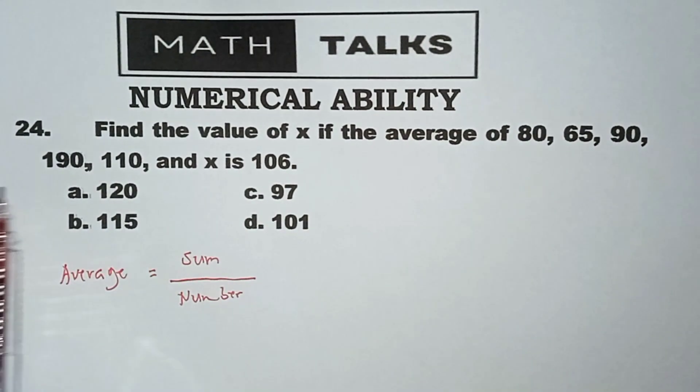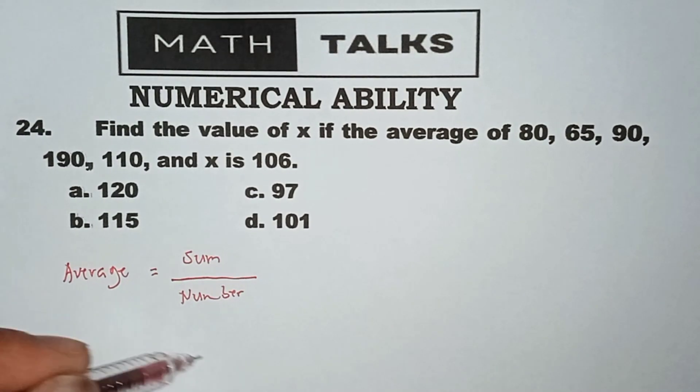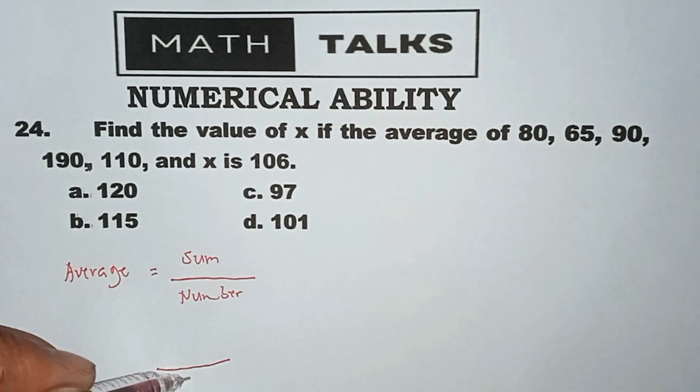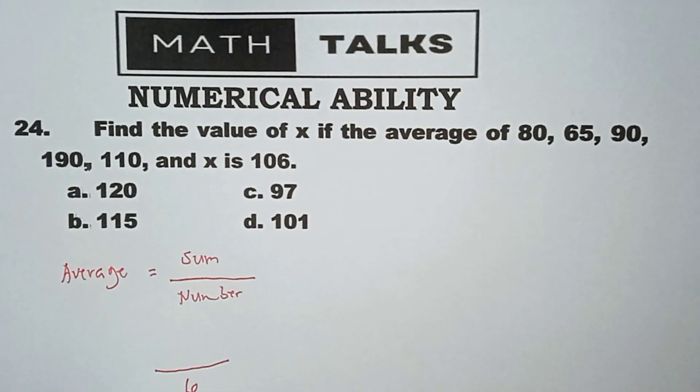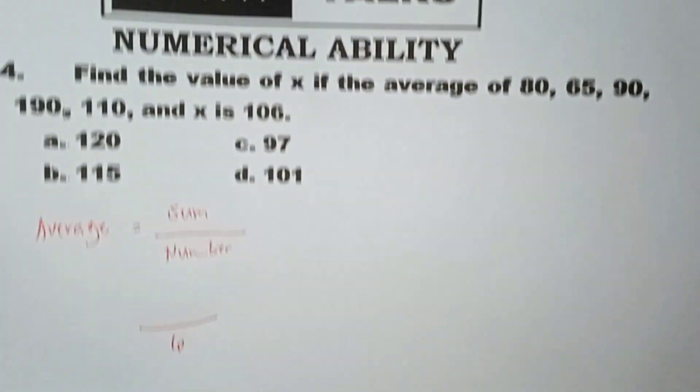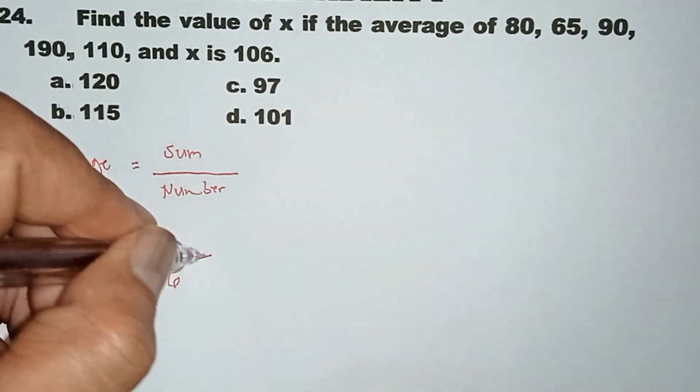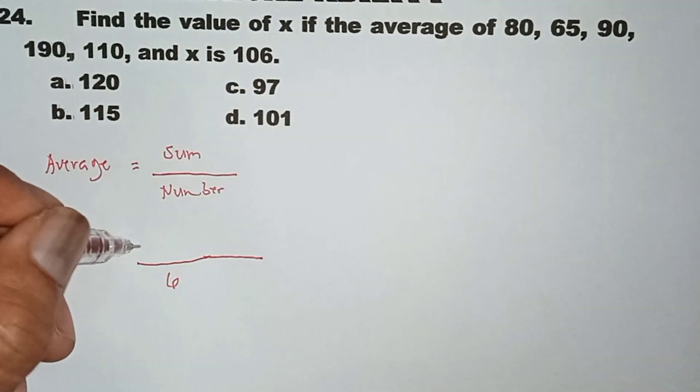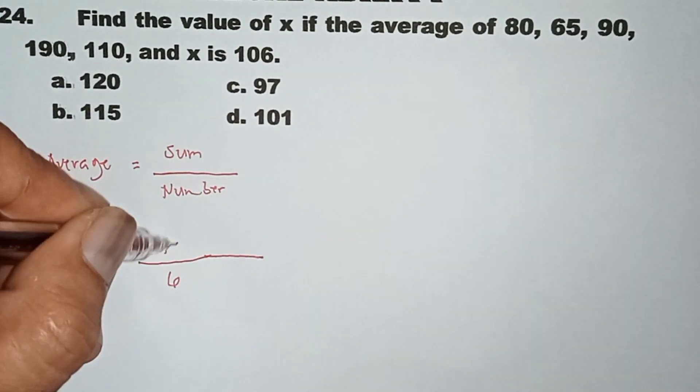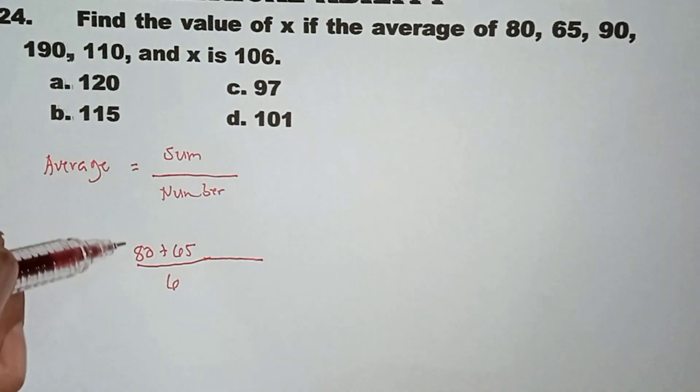And then let's count the number of values: 1, 2, 3, 4, 5, 6. So ilalagay ko na sa baba automatic 6. Okay, next to that, of course we are going to use the given numbers. The sum, kapag sinabing sum, so 80 plus 65 plus